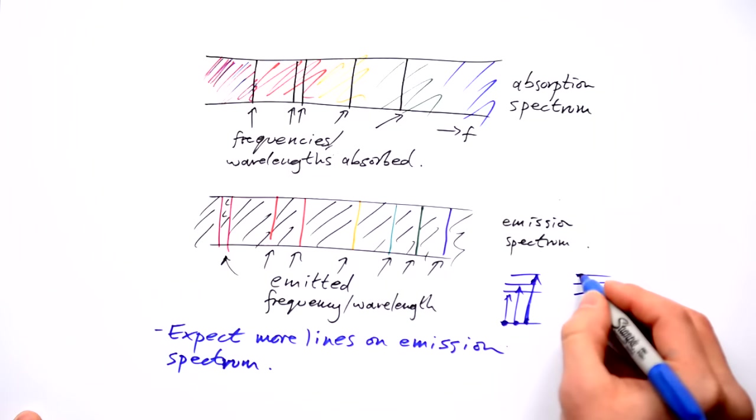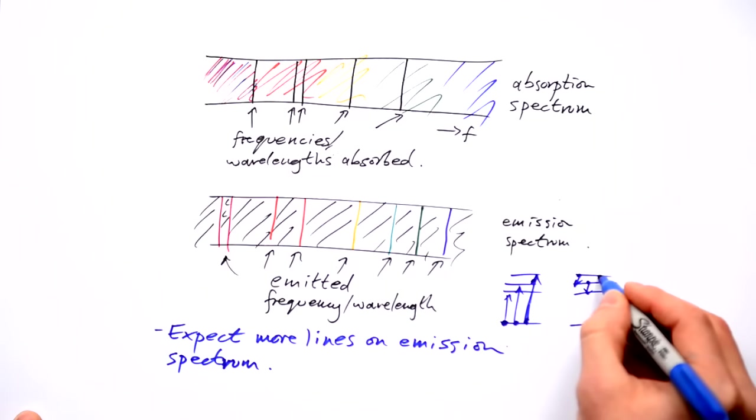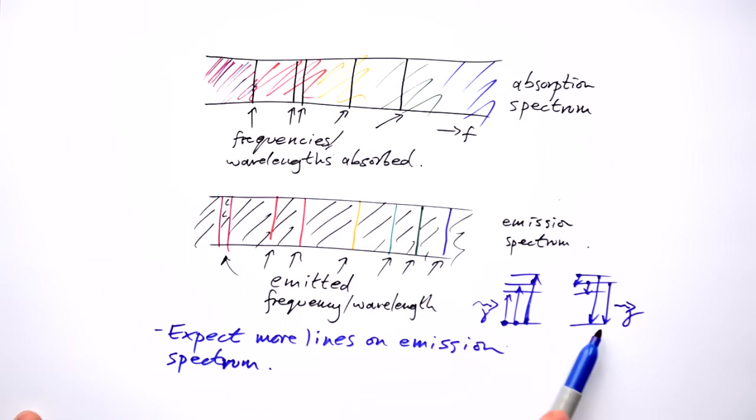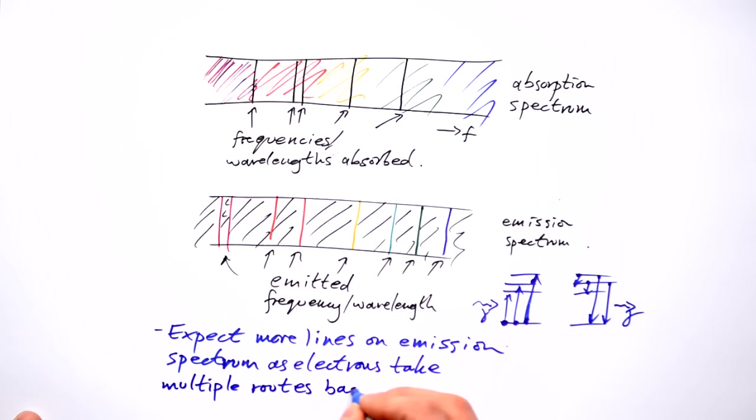On the way back down though, they can take any route they want. So there's always going to be a greater number of different wavelengths that could be emitted that could be absorbed. You take multiple routes back to the ground state.